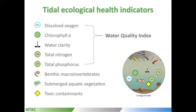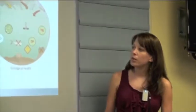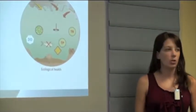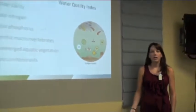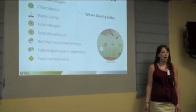So what are our indicators? The indicators for the tidal portion are dissolved oxygen, chlorophyll A, water clarity, total nitrogen, and total phosphorus. These are the water quality indicators and those are pretty common for these kinds of areas. And then we looked at benthic macroinvertebrates, submerged aquatic vegetation or seagrasses, and also we looked at toxic contaminants in the sediment.